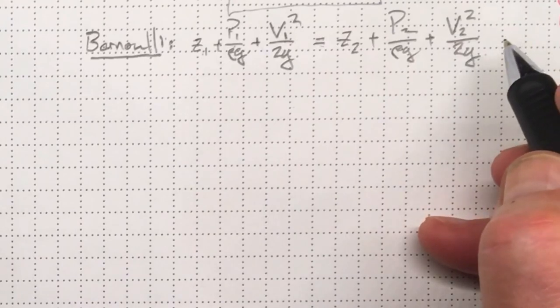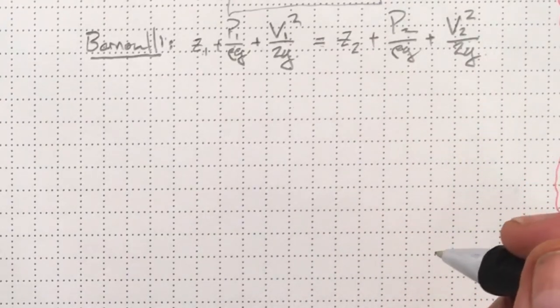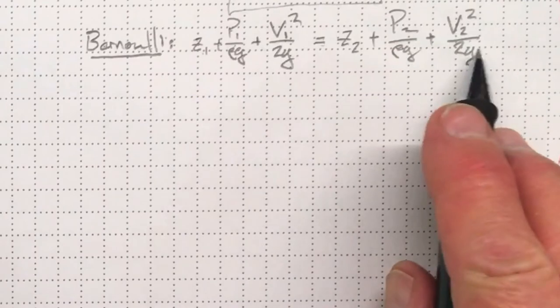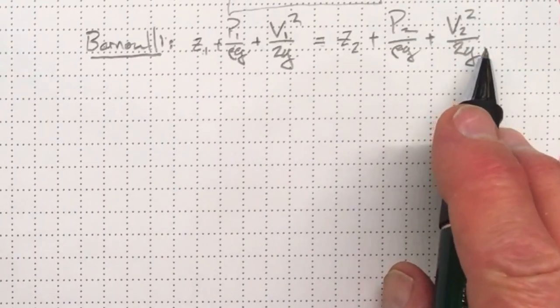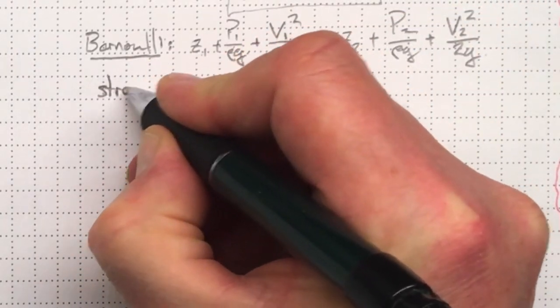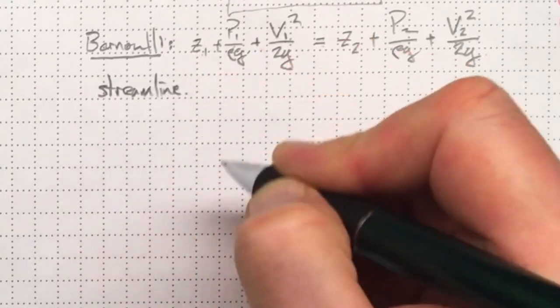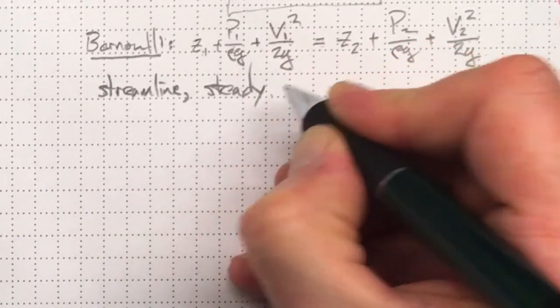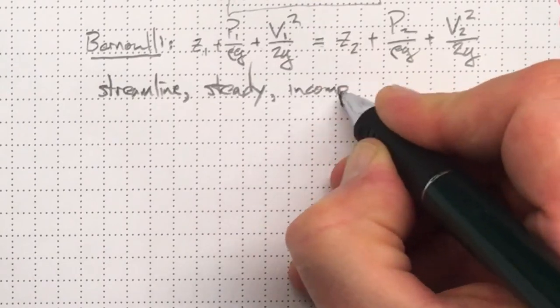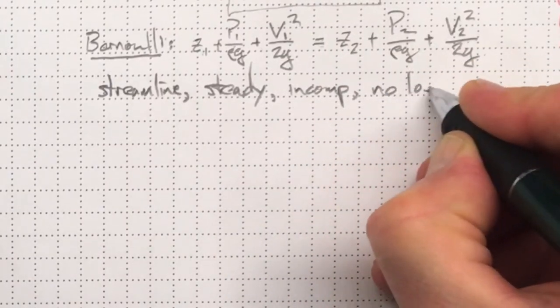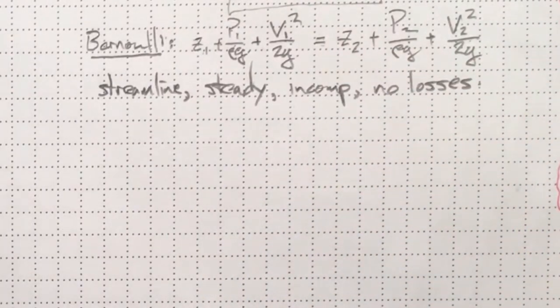Now what do we remember we need as conditions in order to be able to apply Bernoulli's equation between two points? That's right. Those points need to be on a streamline. Flow needs to be steady, incompressible, and there must be no losses or gains of energy.